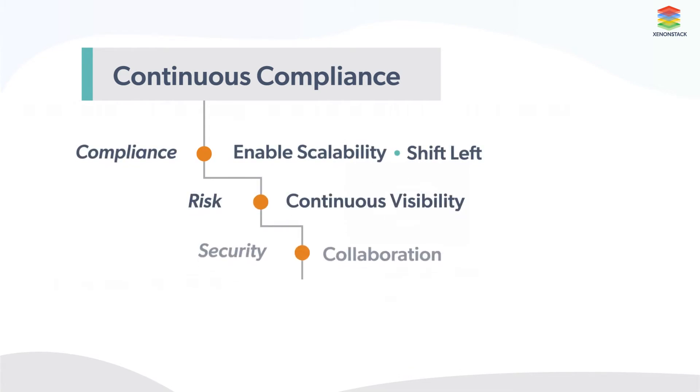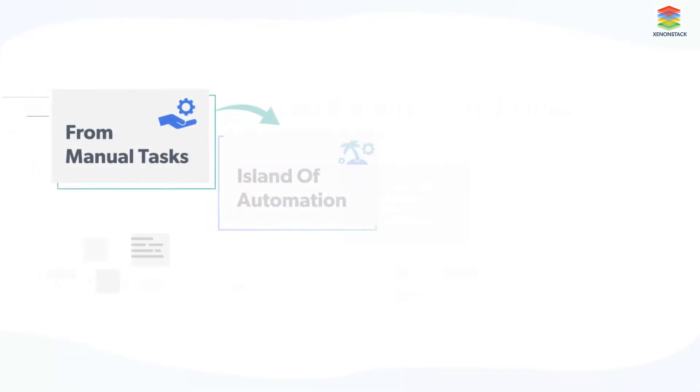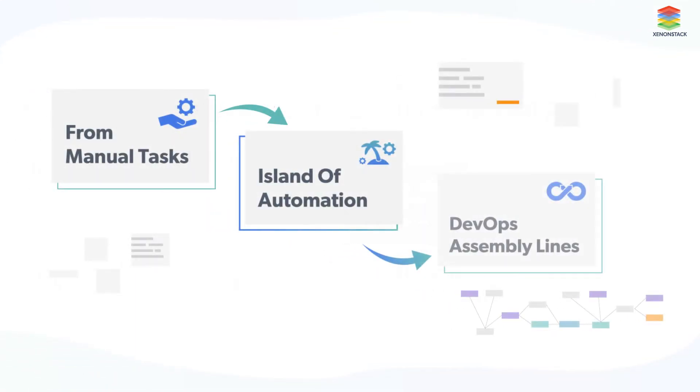DevOps practices have evolved in recent years. It all started from manual tasks, then to automation, and finally to the era of DevOps assembly lines, which aims to support continuous integration, deployment, and delivery.